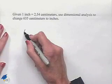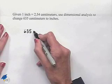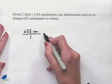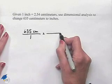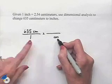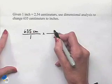We're going to begin by taking 635 centimeters, writing it as a fraction over one, and we're going to multiply that times this conversion unit where we're going to put centimeters in the denominator so that our units will cancel out, inches in the numerator.